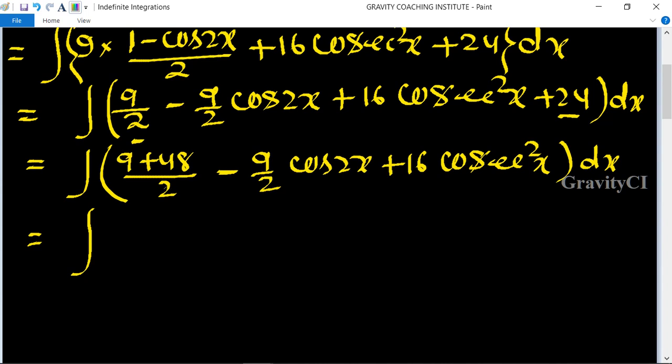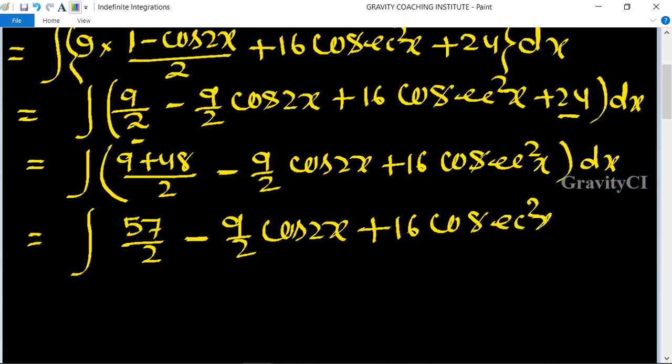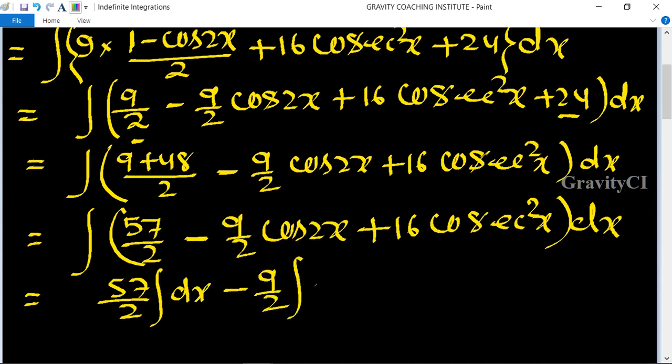Yeh aapka ho jayega 57 upon 2 minus 9 upon 2 cos 2x plus 16 cosec² x dx. So is equal to 57 upon 2 integration dx minus 9 upon 2 integration...